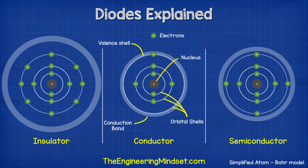However there's another material known as a semiconductor. Silicon is an example of a semiconductor. With this material there's one too many electrons in the outermost shell for it to be a conductor, so it acts as an insulator. But as the conduction band is quite close, if we provide some external energy some electrons will gain enough energy to make the jump from the valence shell into the conduction band to become free. Therefore this material can act as both an insulator and a conductor.